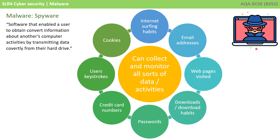It may be that you've previously downloaded some software and it's installed a trojan. Now this backdoor is on your computer system, and a hacker installs spyware onto your computer. They can then use this spyware to monitor your computer's activity and send back information to them. All sorts of information can be collected like email addresses, passwords, credit card numbers, keystrokes, internet surfing habits, and much more.